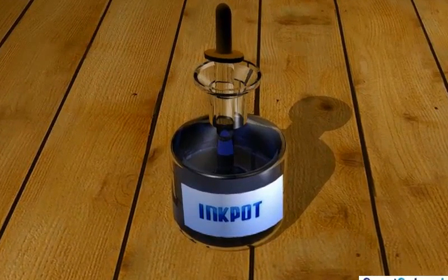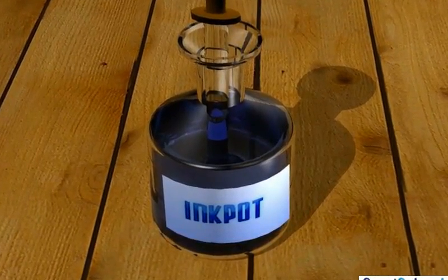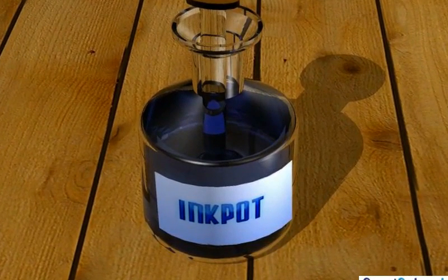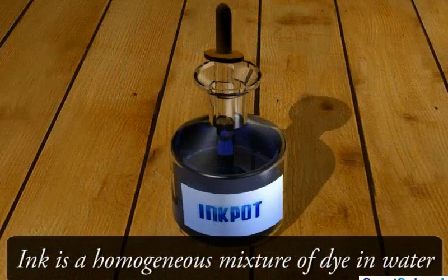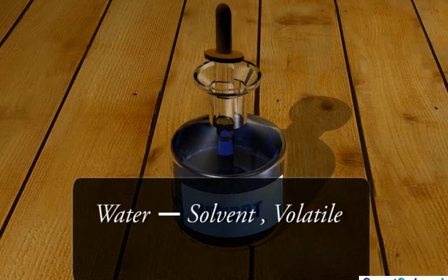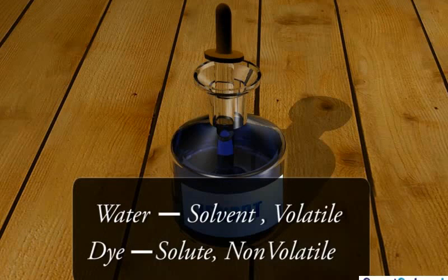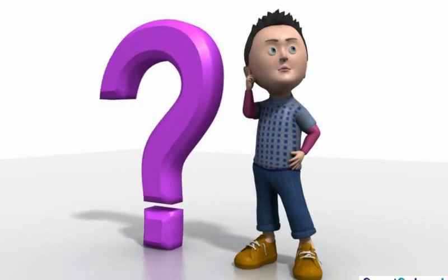The colored component or the dye can be obtained from blue or black colored ink by the process of evaporation. This is because ink is a homogeneous mixture of dye in water, where water the solvent is a volatile component and dye the solute is a non-volatile component. But what actually is the procedure for separating the dye?